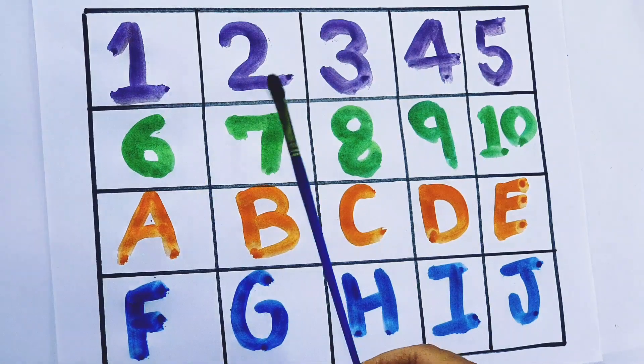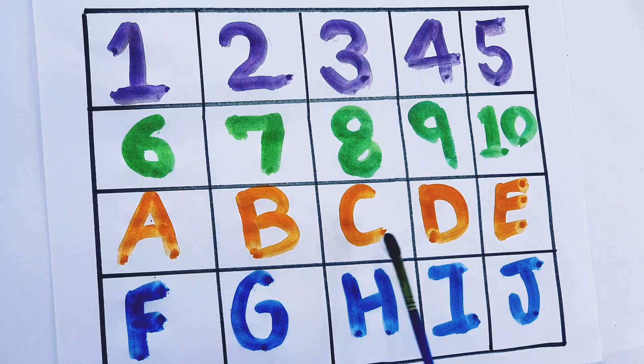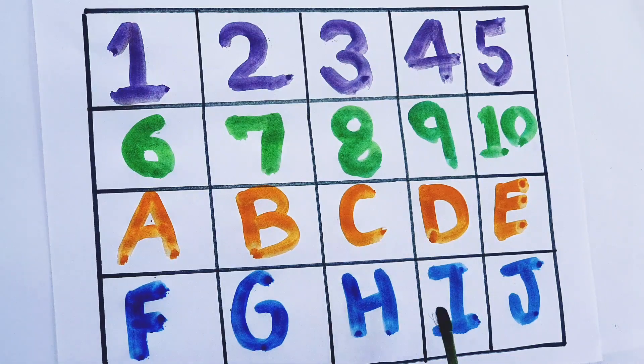And A, B, C, D. 1, 2, 3, 4, 5, 6, 7, 8, 9, 10. A, B, C, D, E, F, G, H, I, J.